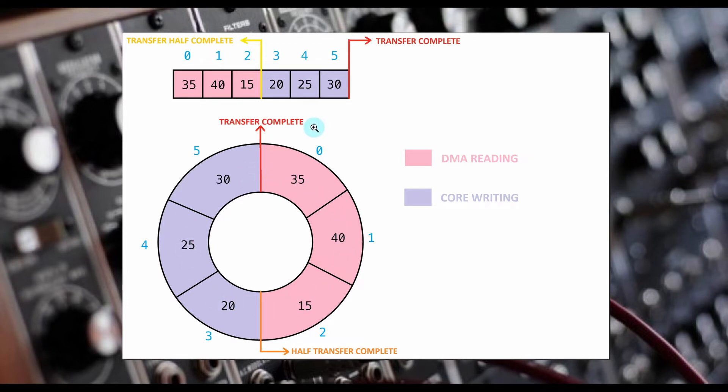Ideally, the core is filling up half the buffer much faster than the DMA transfers the other half to the SPI port. We are talking about the core writing bits to memory at 100 MHz versus the DMA transferring bits at 1 MHz.